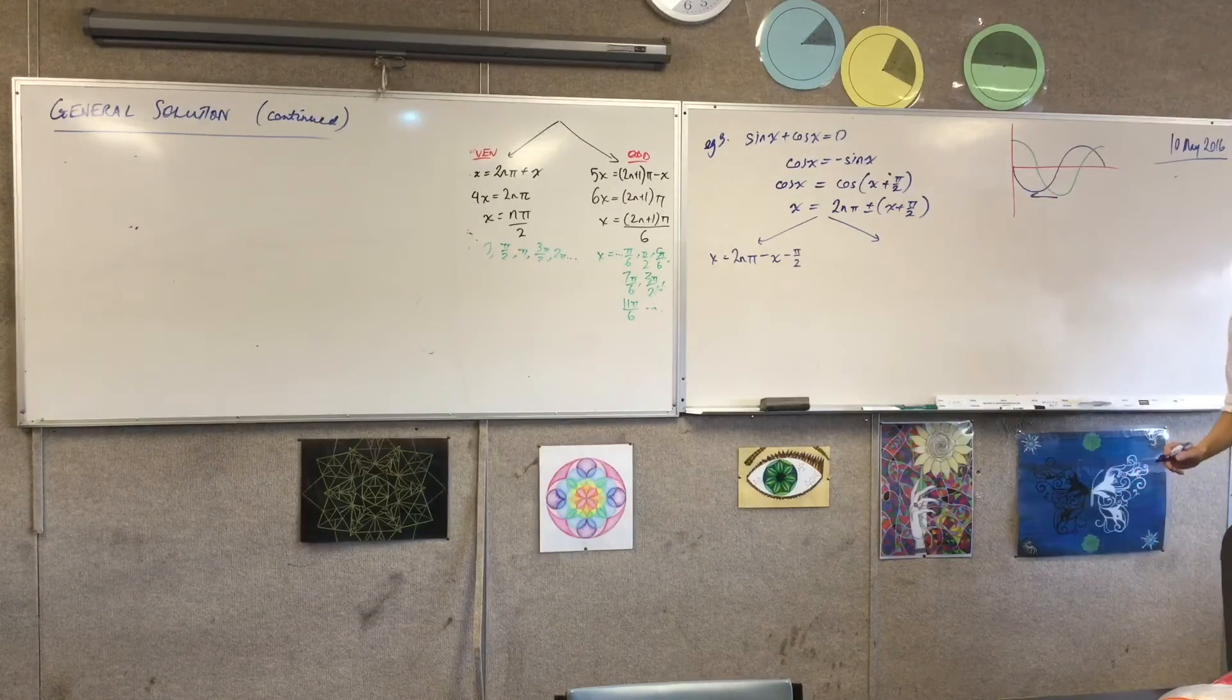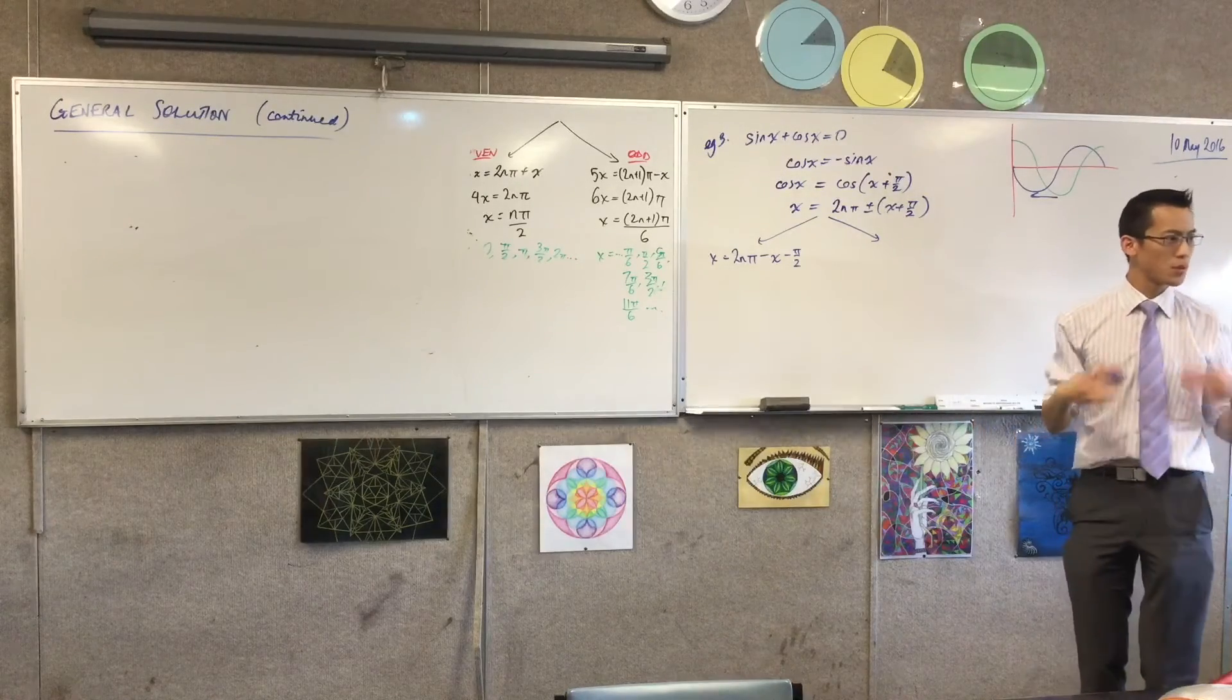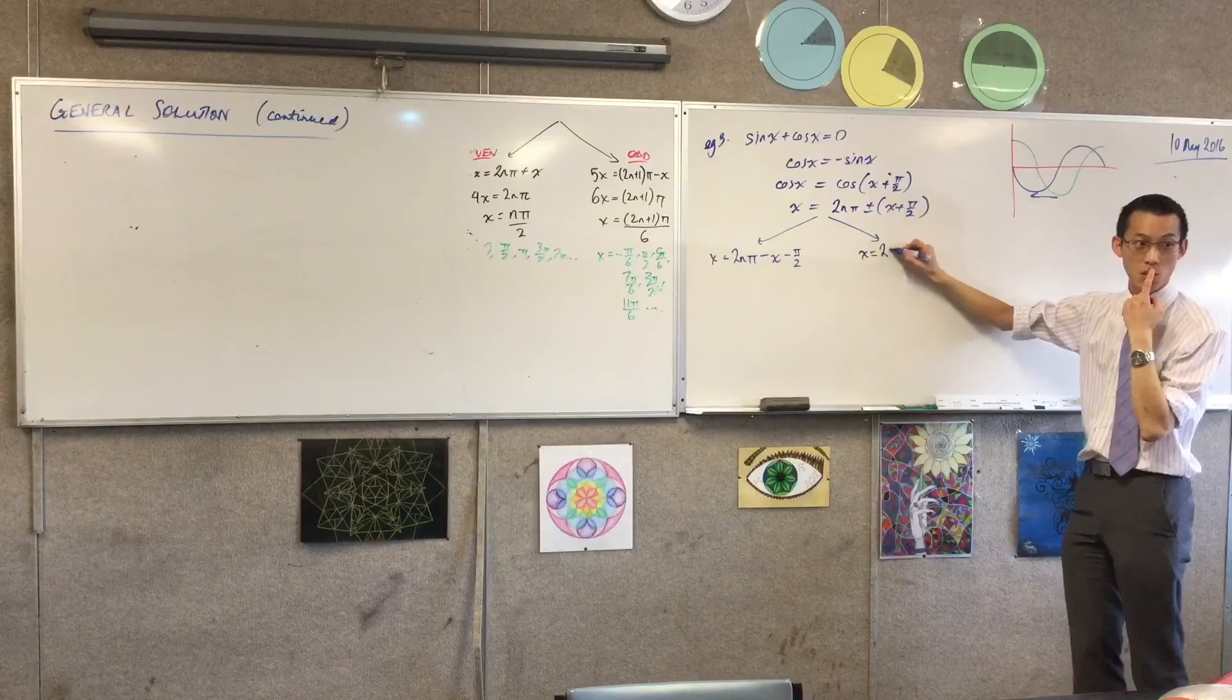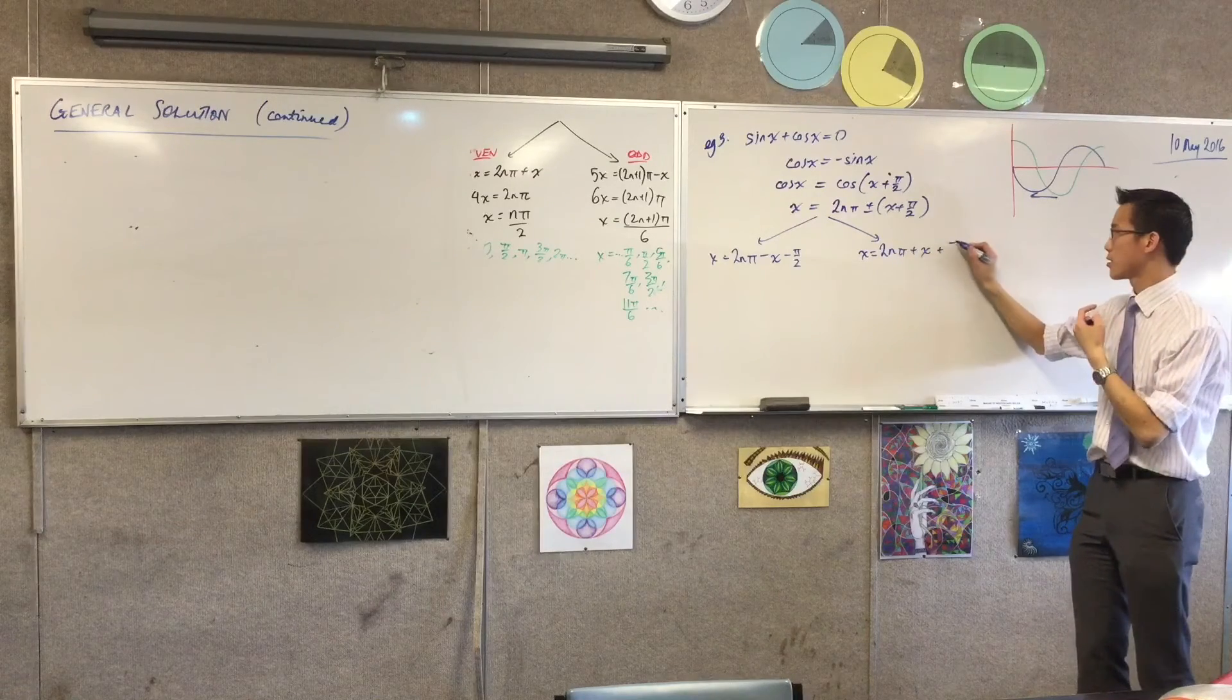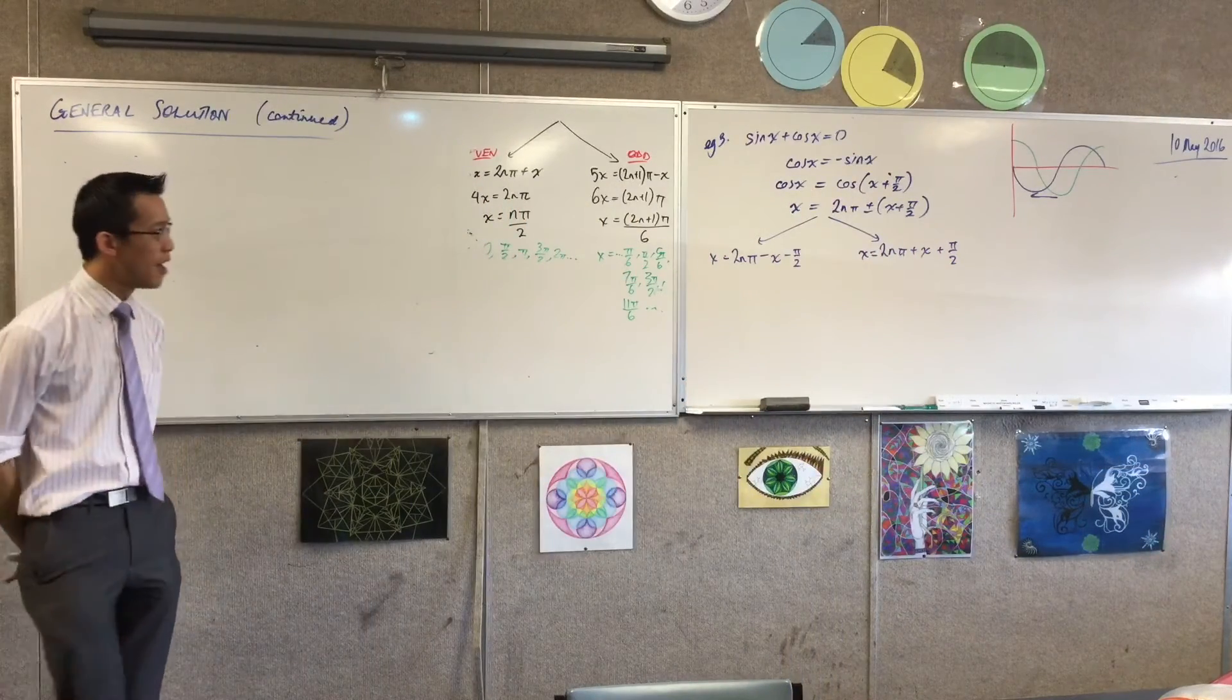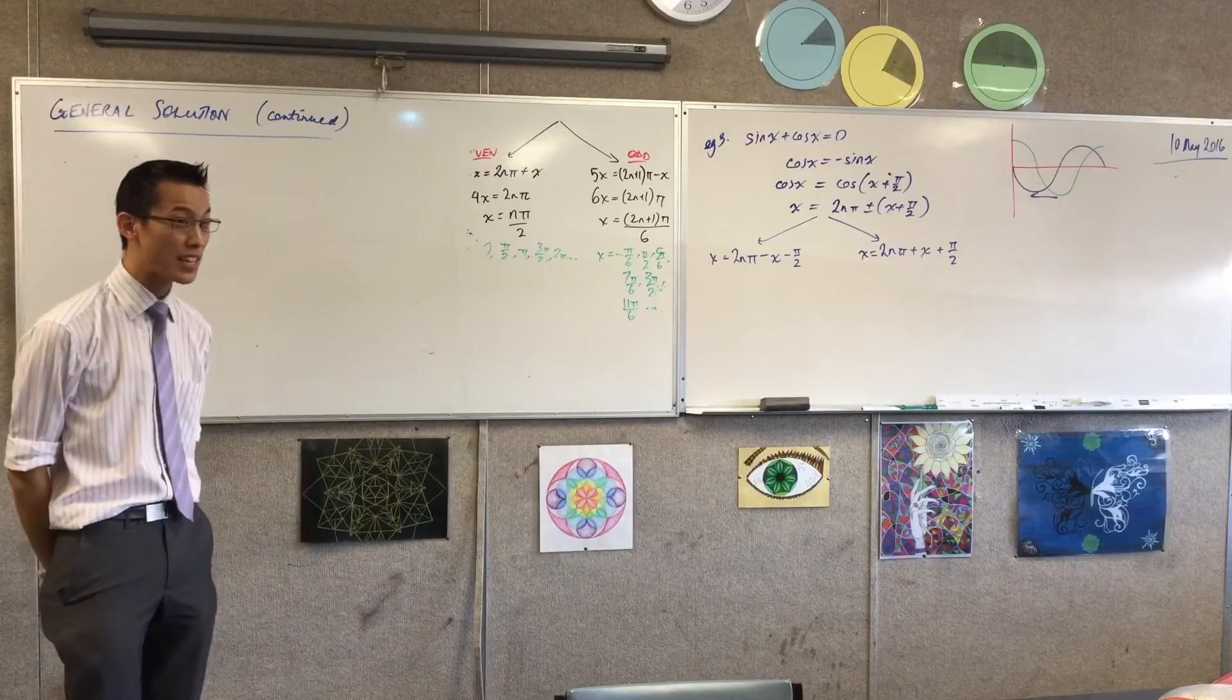That's just me taking the minus side and expanding out the brackets. What would the right-hand side look like? What happens when I take the positive side? x equals what? Someone help me out. 2nπ plus x plus π/2. Now the reason I wrote both of them is I've got both my cases and then I can solve them. But before I even put pen to paper, I noticed something a little bit weird.